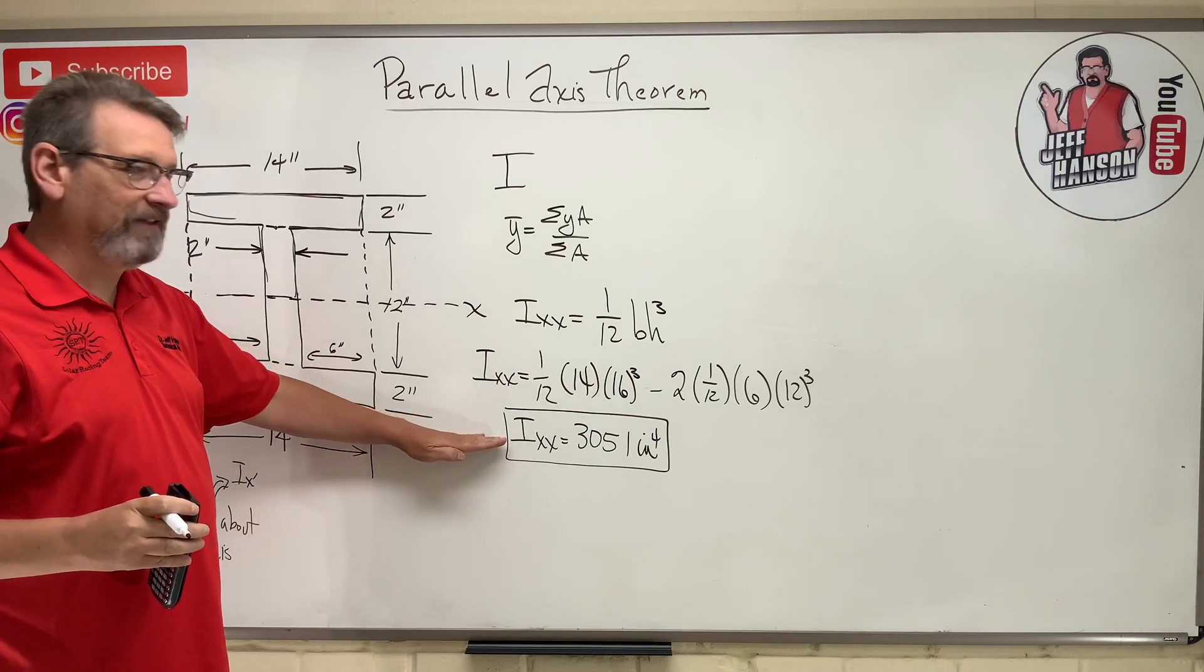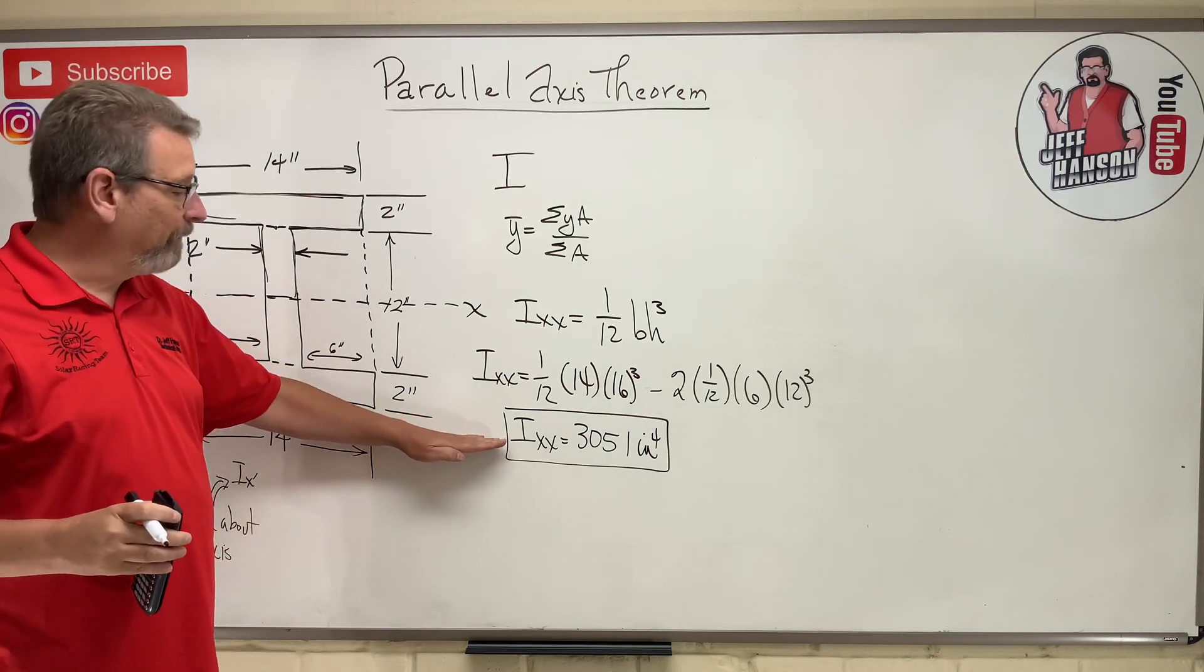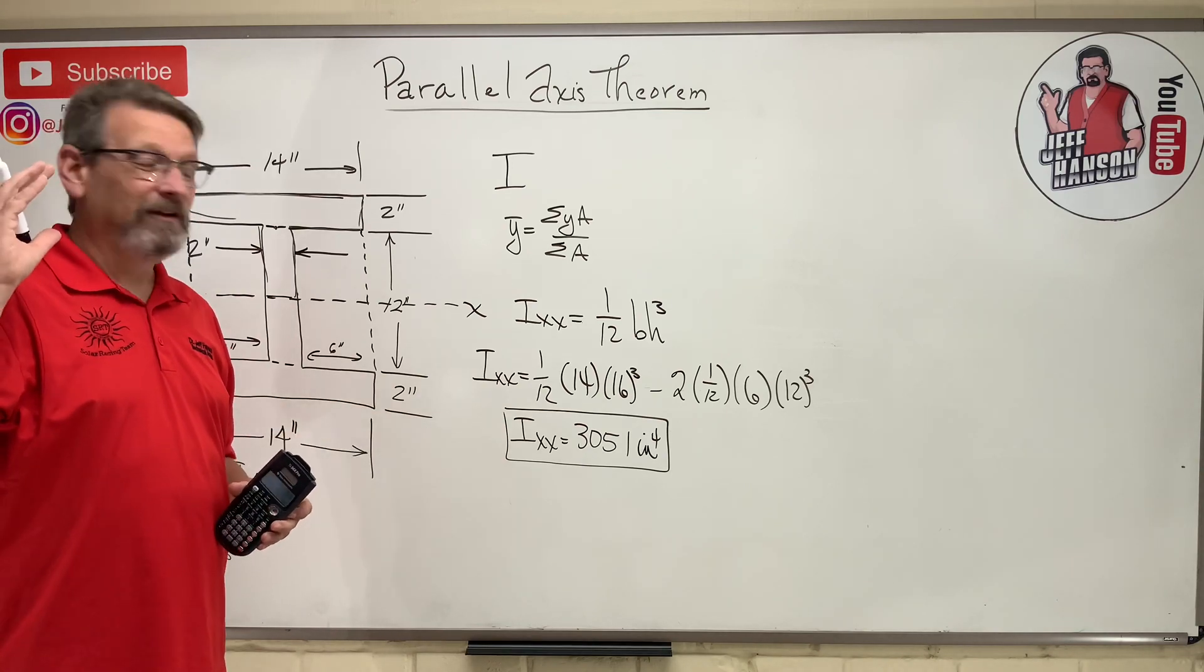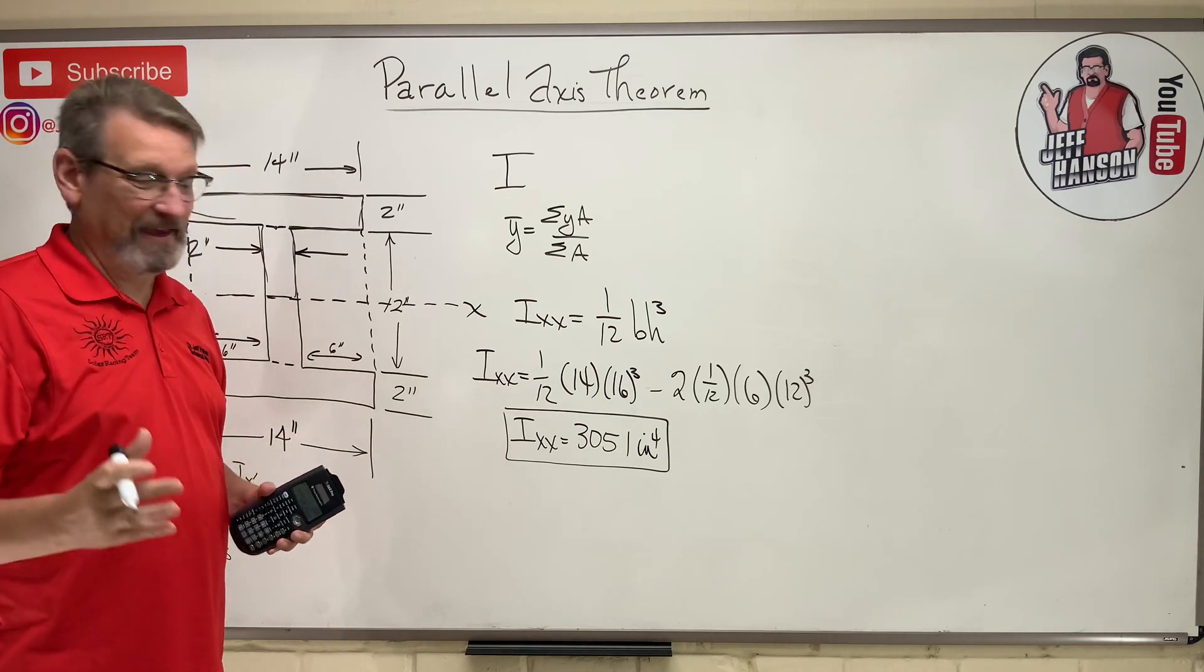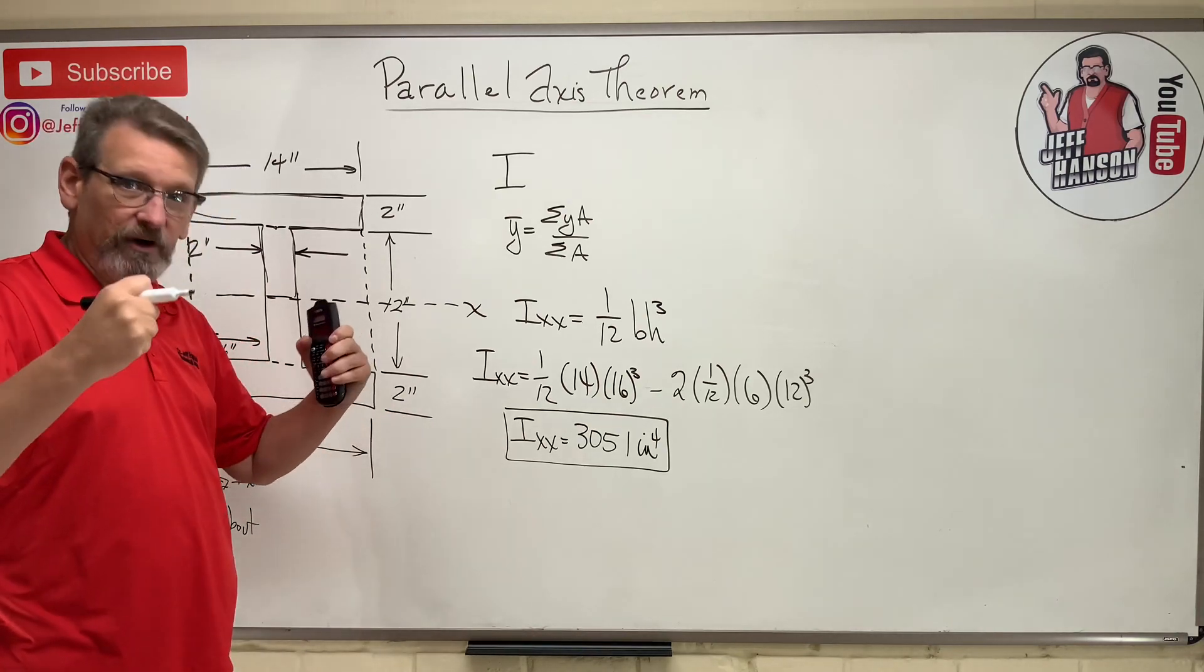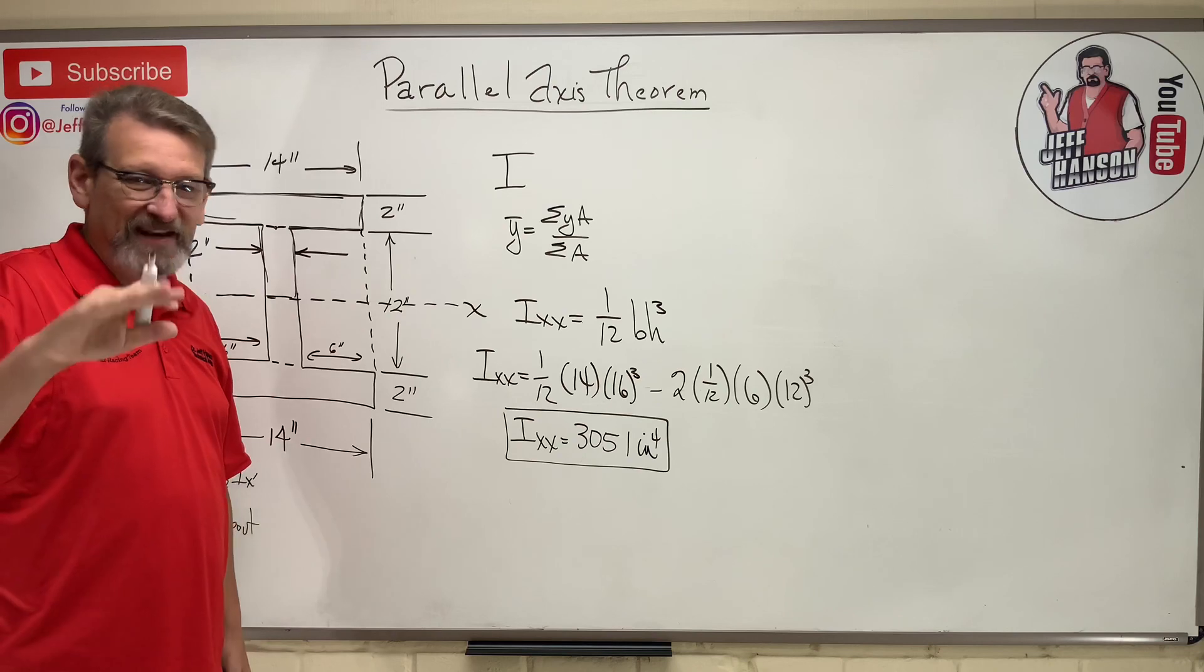This is a representation of a geometric property of the cross section that's going to tell us about how likely it is to bend. So the bigger this is, the stronger it is, the less bending that you'll have.